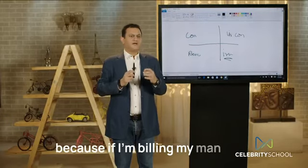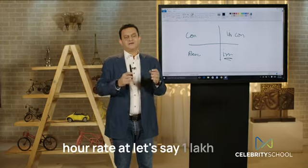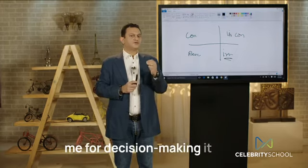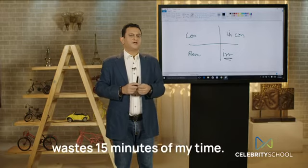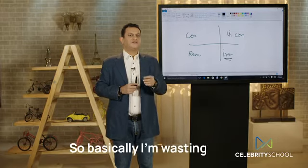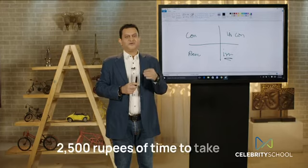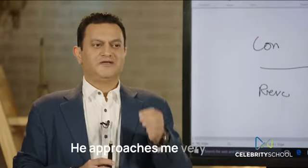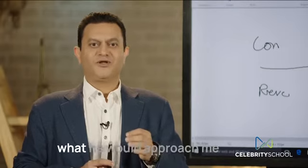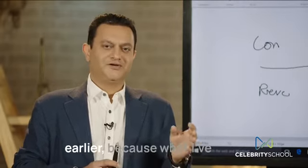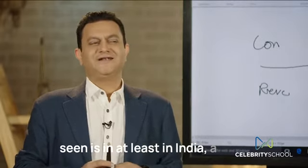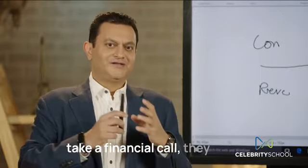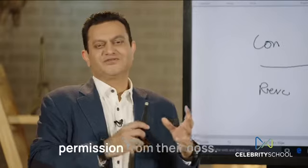Because if I'm billing at a rate of 1,000,000 rupees an hour, every single time somebody approaches me for decision making, it wastes 15 minutes of my time. So basically, I'm wasting 25,000 rupees of time to take a 10,000 rupee decision. This has completely transformed my life — he approaches me very few times compared to before. Because what I've seen is, at least in India, a lot of assistants feel they should take permission from their boss when making a financial call.